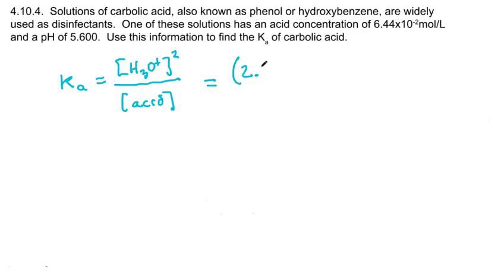Which I find to be 2.512 times 10 to the minus 6. Don't forget to square it, and the original concentration of the acid before it started dissolving was 6.44 times 10 to the minus 2.